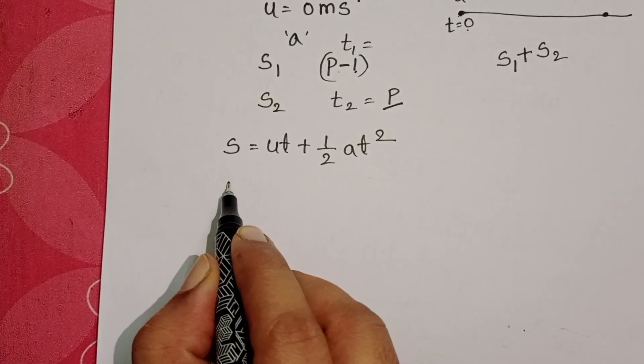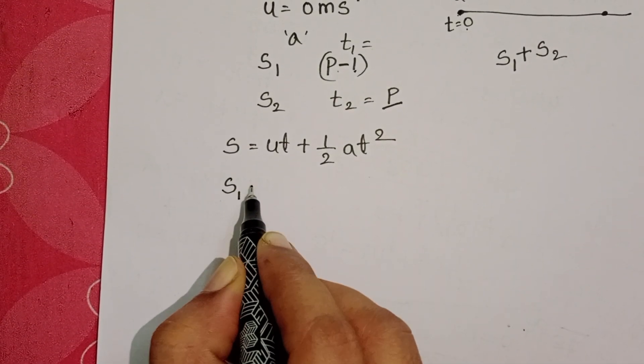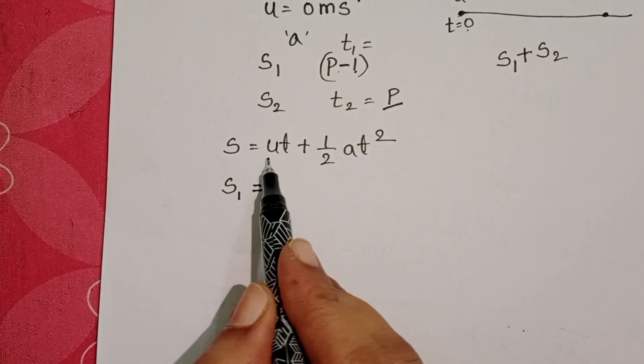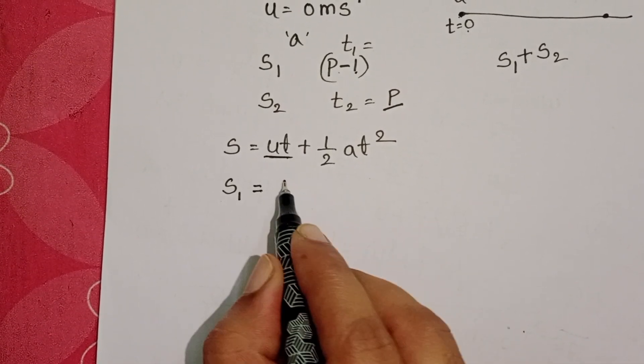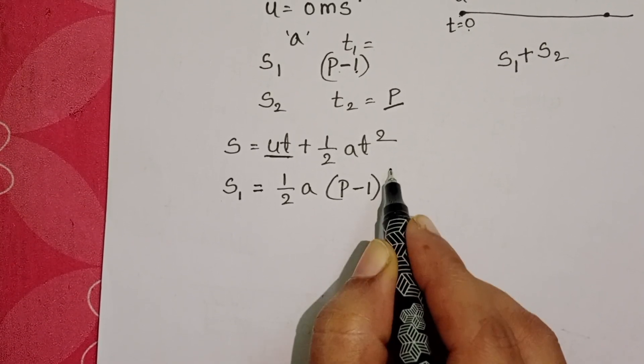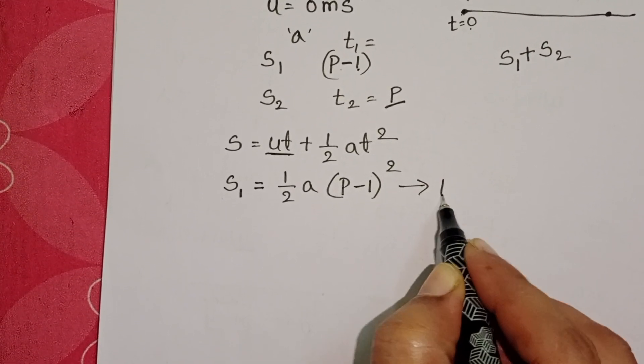From starting position, the distance S1 is travelled by the body within the time P-1 seconds. The UT term is zero, so S1 equals half A into time P-1 whole square. Take this as equation 1.